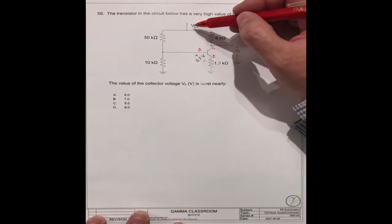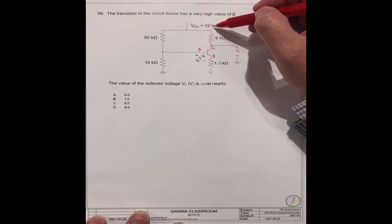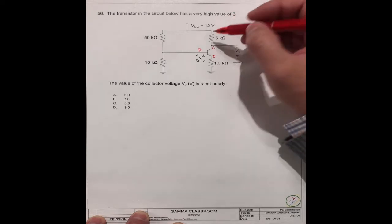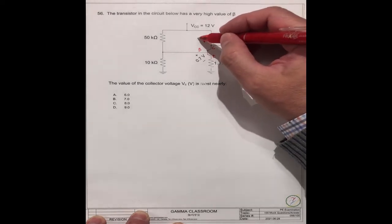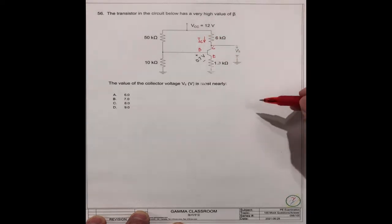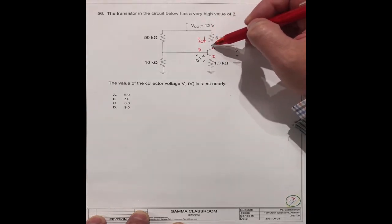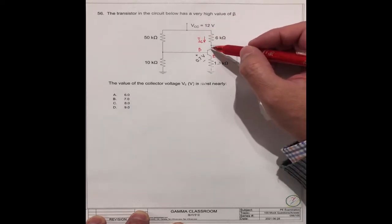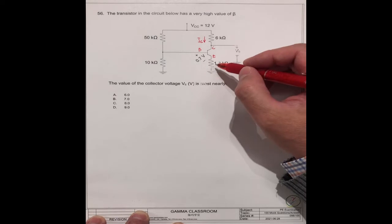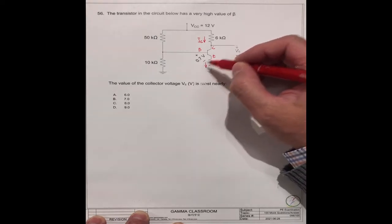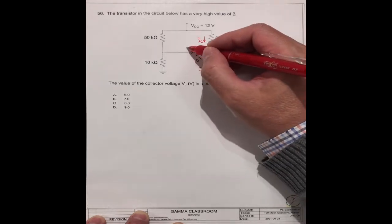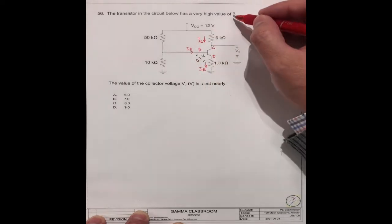We know the supply voltage at this point is 12V. We know this resistance is 6kΩ. If we can find the collector current IC, then we can get the voltage at this point. IC is similar to the emitter current IE because IB is very small, since beta is very high.